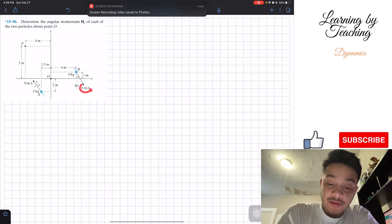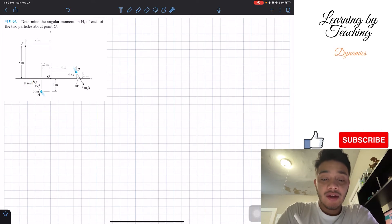Both of them have their respective velocities, and we want to calculate the angular momentum about this point O, which is basically the origin on this Cartesian coordinate.